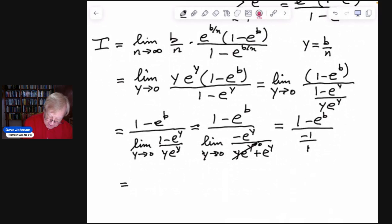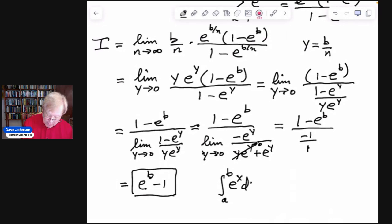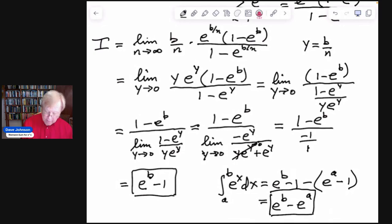And so that gives us, we move the negative sign upstairs and distribute, we get e to the b minus 1 which is the answer. And again, we can generalize that so that we get the integral from a to b of e to the x dx is going to equal e to the b minus 1 minus e to the a minus 1 which is equal to e to the b minus e to the a which is exactly what we would expect using the fundamental theorem of calculus.